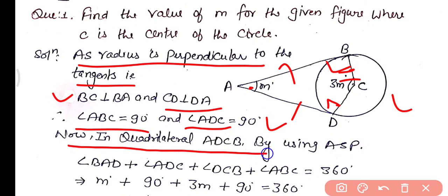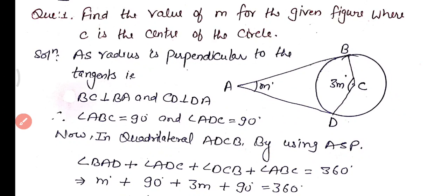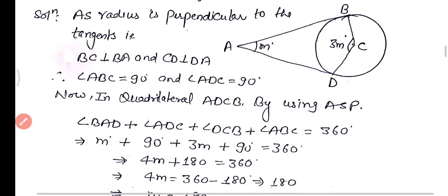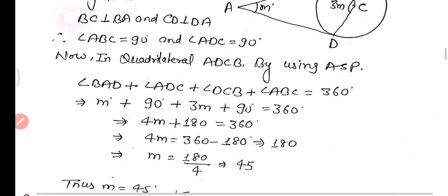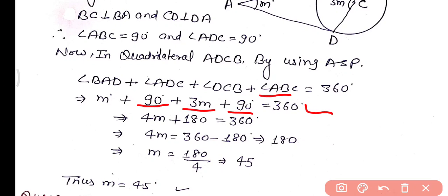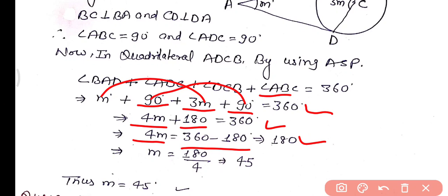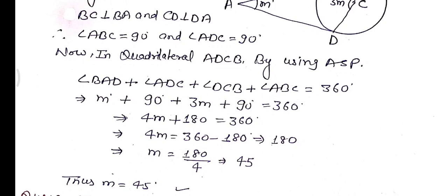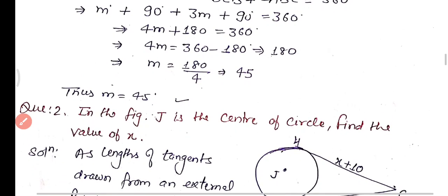In quadrilateral ABCD, by angle sum property: angle BAD + angle ADC + angle DCB + angle ABC = 360 degrees. So m + 90 + 3m + 90 = 360. This gives 4m + 180 = 360, so 4m = 180, and m = 45 degrees.